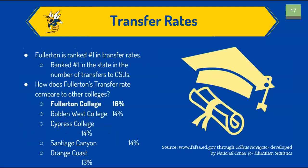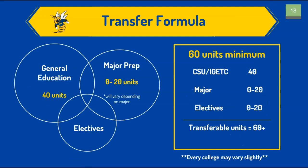Our transfer rates are high. Fullerton is ranked number one in transfer rates; we have the highest number in the state to the Cal States. What you're looking for in that transfer is 40 units of general ed that the CSUs and UCs want you to have — and that you have to have to graduate anyway. You might as well take your English, math, public speaking, all of those general ed classes, science, and then major prep. You want to choose a major and take classes that those schools want you to take, and you can have some electives built in. The CSU and IGETC are looking at 40 units of general ed, zero to 20 in your major — some majors are 18 units, some are 15 — and then electives. So you might go a little over 60.